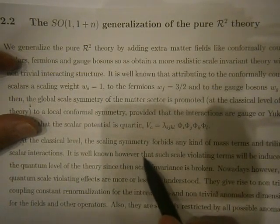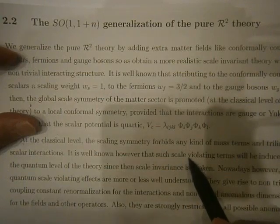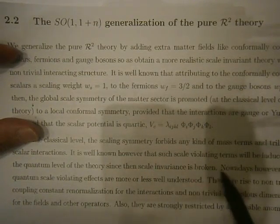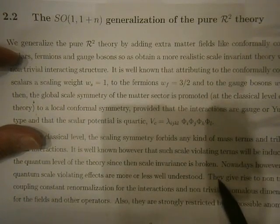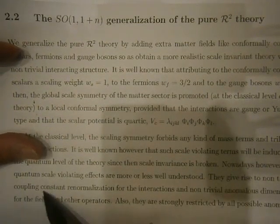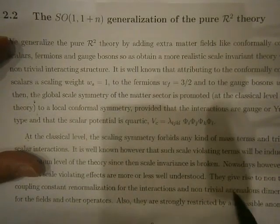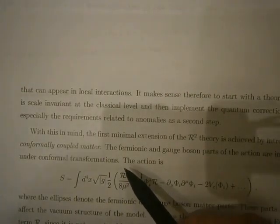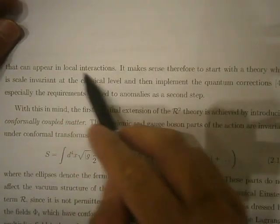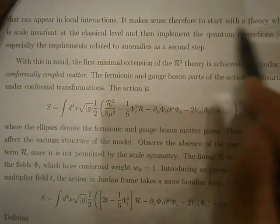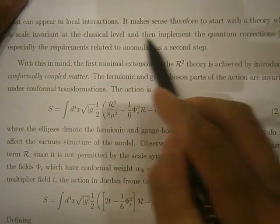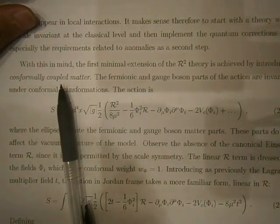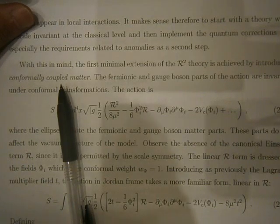At the classical level with fermions and gauge bosons, the scale interactions. However, the scale invariance is broken at the quantum level. The scale violating effects are more or less well understood. They arise from the coupling constant renormalization for the interactions and non-trivial anomalous dimensions for the fields and other operators. Also, they are strongly restricted by all possible anomalies that provide the local interaction. The classical implement, the post-trivial terms, the anomalous with the unity of the mind, the factor, the space, the operator, the dimension conformal coupled.